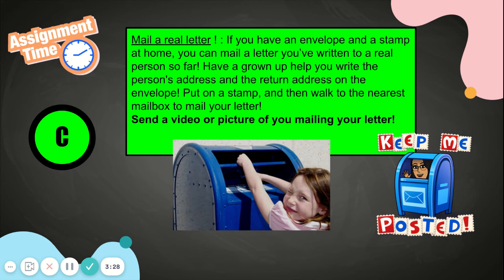Option C says mail a real letter. If you have an envelope and stamp at home, you can mail a letter you've written to a real person. Have a grown-up help you write the person's address and the return address on the envelope, put on a stamp, and then walk to the nearest mailbox to mail your letter. Don't forget to send a video or picture of you mailing your letter friends — this is part of your assignment. If you are a friend that's in growing up green today, you might not be able to complete this option today, but that's okay — you can always choose option C another time.